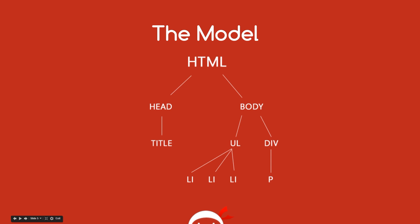And finally we come to the last component, which is the model. The model basically describes how these objects are laid down in a tree fashion, much like this diagram. We've got the HTML at the top, underneath that we have head tags, title tags, body tags, ul tags, div, and so on. It's all displayed in some kind of hierarchical tree. So that is one aspect of the model - it describes how those objects are laid down.